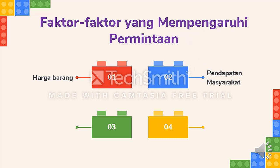Faktor kedua adalah pendapatan masyarakat. Pendapatan yang diperoleh oleh seseorang akan sangat mempengaruhi permintaan barang. Jika pendapatan rata-rata setiap orang naik maka akan mempengaruhi jumlah barang yang diminta bertambah. Sebaliknya, apabila pendapatannya turun atau tidak memiliki pendapatan maka akan sangat mempengaruhi berkurangnya jumlah barang yang diminta.